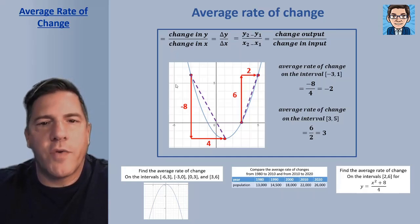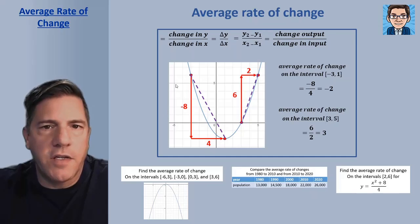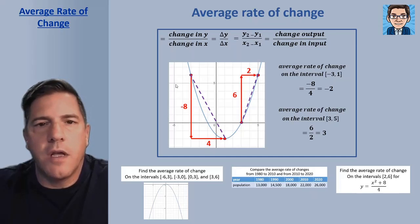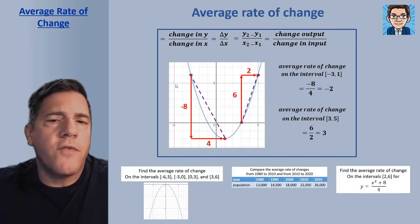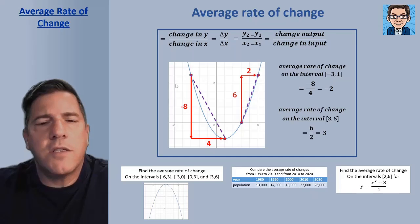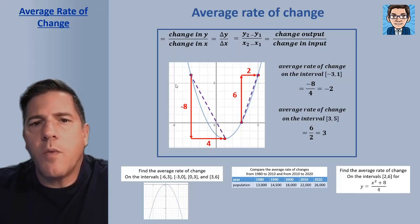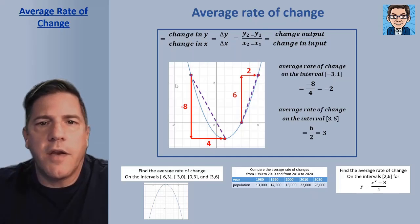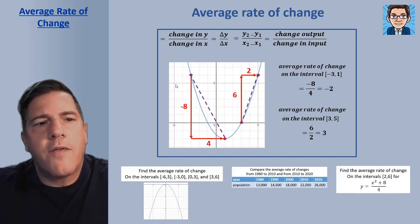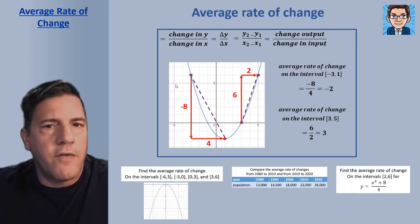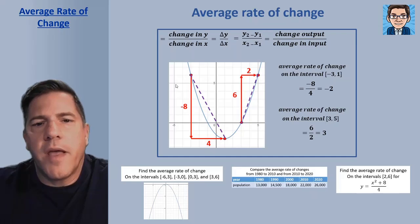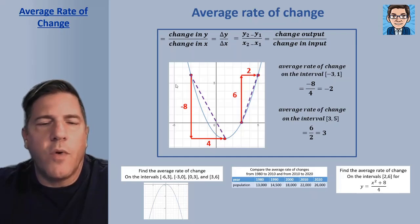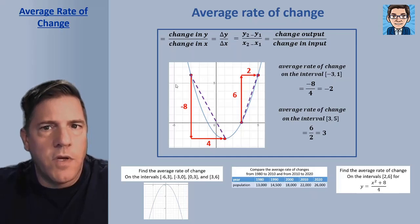This video is going to take a look at the average rate of change. The average rate of change is how much y is changing divided by how much x changes. In linear functions, that's the slope, which stays the same throughout the whole function. Now we're going to take a look at average rate of change in nonlinear functions and see that it depends on where we are on the function.